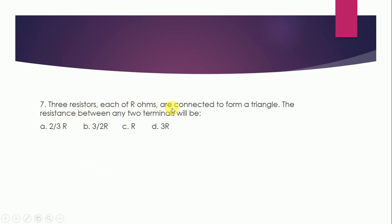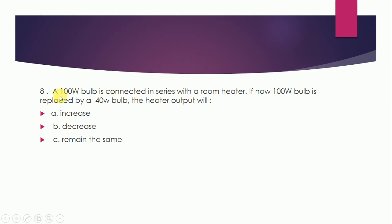Three resistors, each R ohms, are connected to form a triangle. The resistance between any two terminals will be: 2/3 R, 3/2 R, R, or 3R? Correct answer is A — 2/3 R. Next question: a 100 watt bulb is connected in series with a room heater. If the 100 watt bulb is replaced by a 40 watt bulb, the heater output will be: A: increases, B: decreases, C: remains the same. The correct answer is B — it decreases.